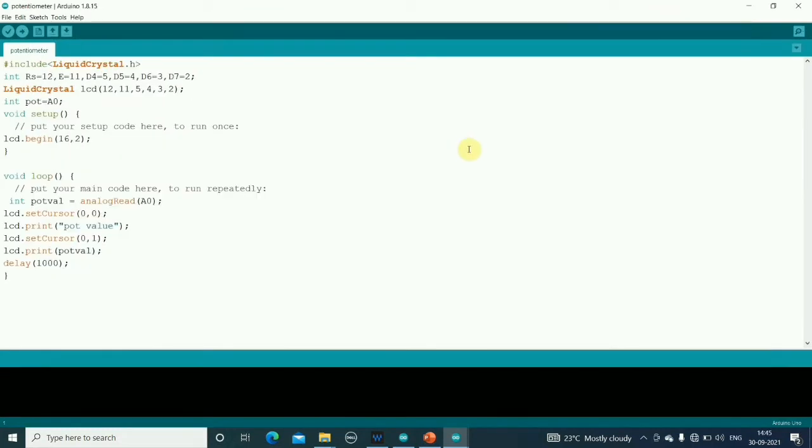This is the code for interfacing the potentiometer. I will explain the code line by line. Here I am going to display the values on LCD, and therefore first I have to add LiquidCrystal.h. I have written hash include LiquidCrystal.h.